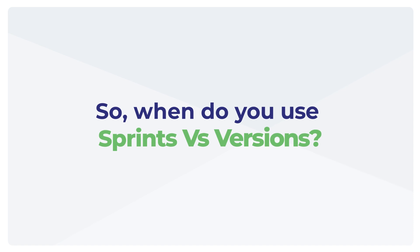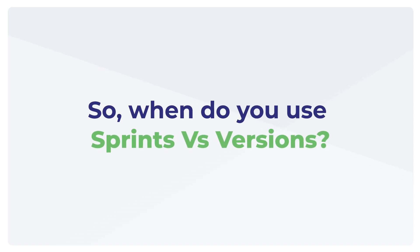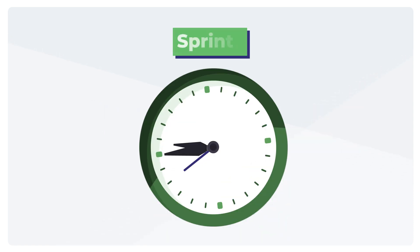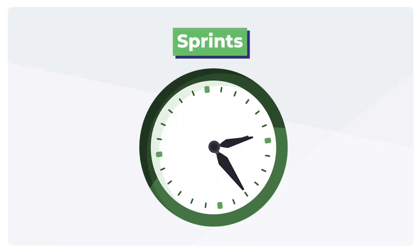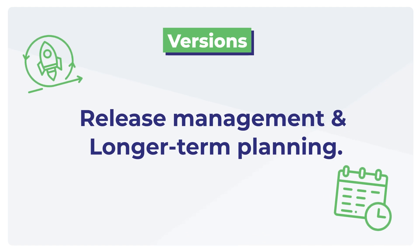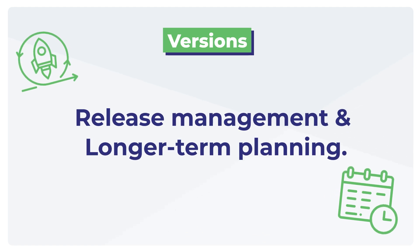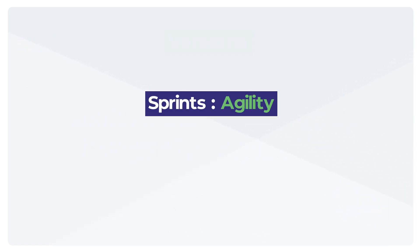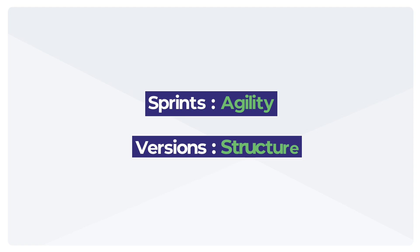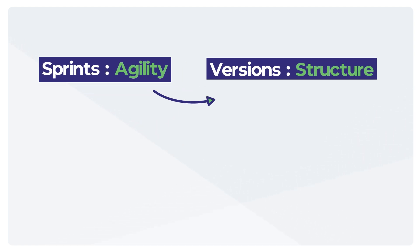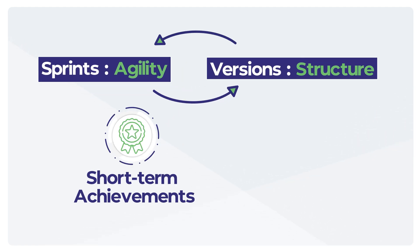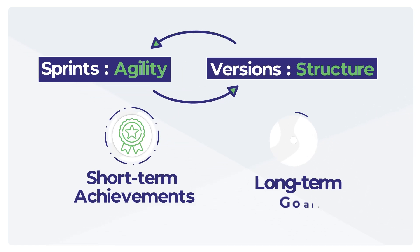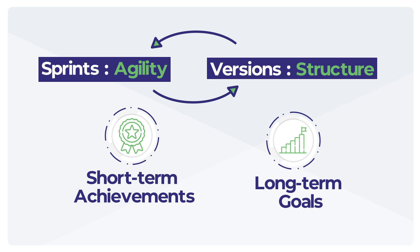So when do you use sprints versus versions? Sprints are for day-to-day development and maintaining momentum. Versions are for release management and longer-term planning. In short, sprints drive agility, while versions provide structure. Together, they help balance short-term achievements with long-term goals in JIRA.